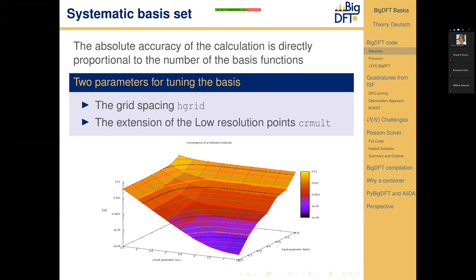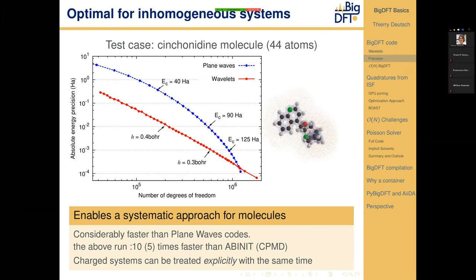Thanks to the adaptability of the mesh, BigDFT is optimal for computing inhomogeneous systems such as molecules. Comparing the number of degrees of freedom needed to calculate a molecule, a wavelet code like BigDFT reduces the number of degrees of freedom by an order of magnitude for the same precision, which saves time — also by an order of magnitude — but also memory. Since we have free boundary conditions, we can easily calculate charged systems, in contrast to plane waves.